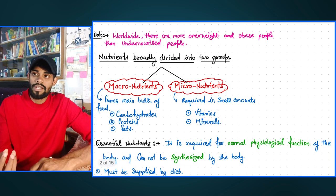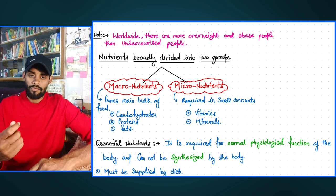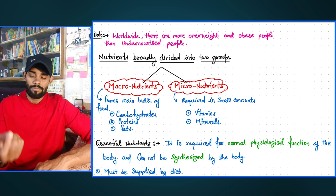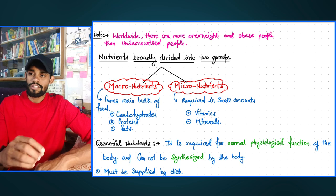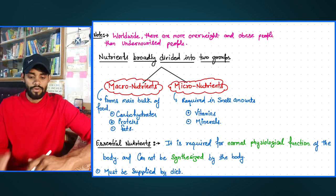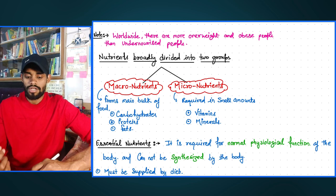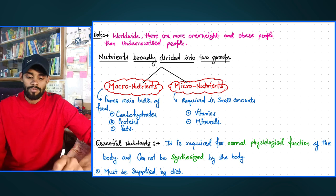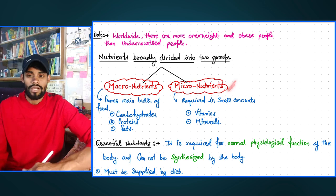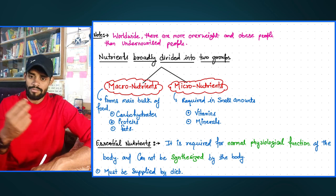Nutrients are the specific elements or substances required by the body for proper functioning. For example, nutrients include carbohydrate, protein, fat, vitamins, minerals, etc. These nutrients are obtained by food and are broadly divided into two classes: macronutrients and micronutrients. Macro means required in large amount — so carbohydrate, protein and fat are macronutrients. Micro means small amount — vitamins and minerals are micronutrients.